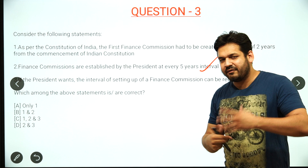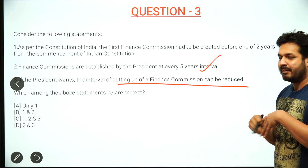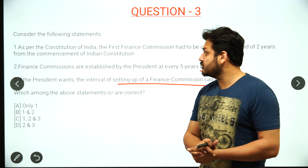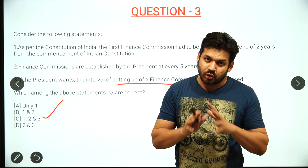The second statement is that the Finance Commission is established every fifth year. The third statement is that the interval of setting up the Finance Commission can also be reduced — the time plan can be shortened. All three statements are correct, so the answer is C — that is 1, 2, and 3.